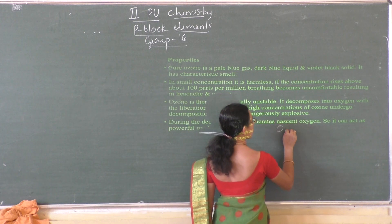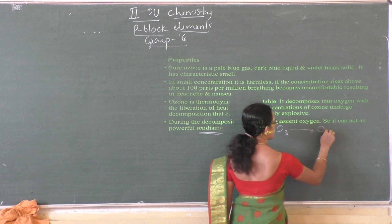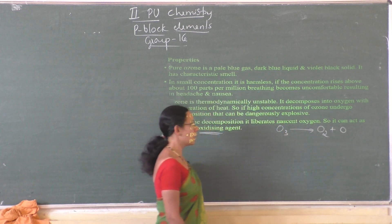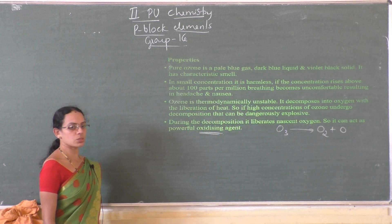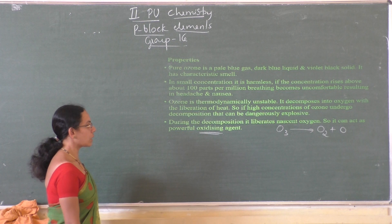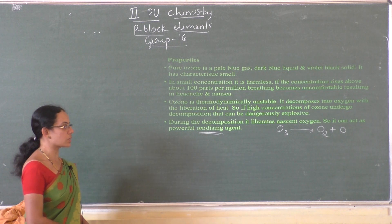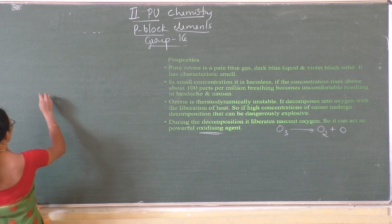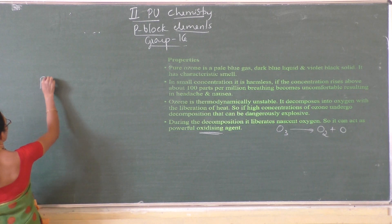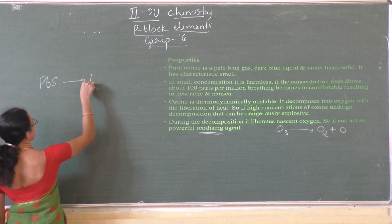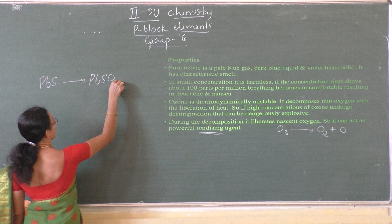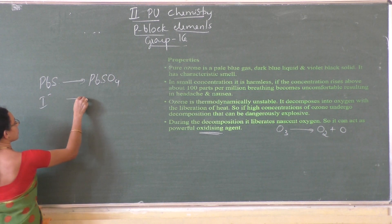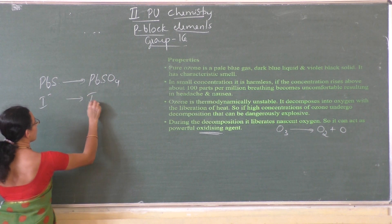Ozone O3 on decomposition liberates O2 and nascent oxygen O. Because of that liberation of nascent oxygen, it acts as a powerful oxidizing agent. It oxidizes lead sulfide to PbSO4 and it oxidizes I⁻ to I2.